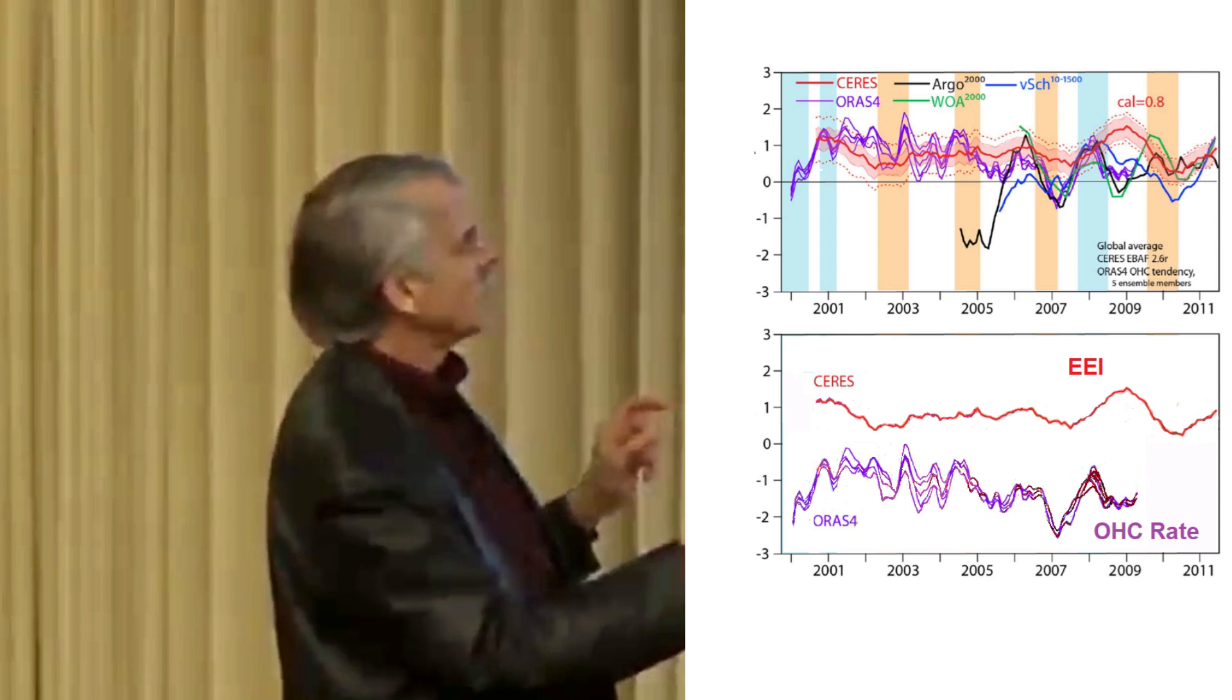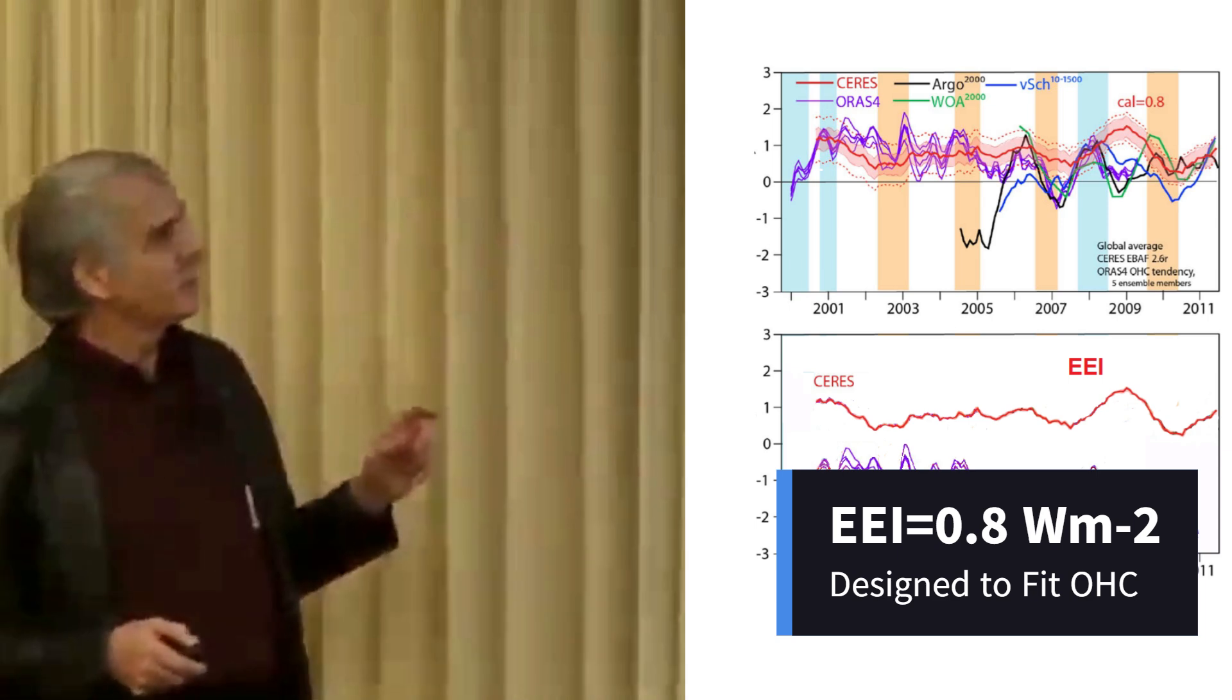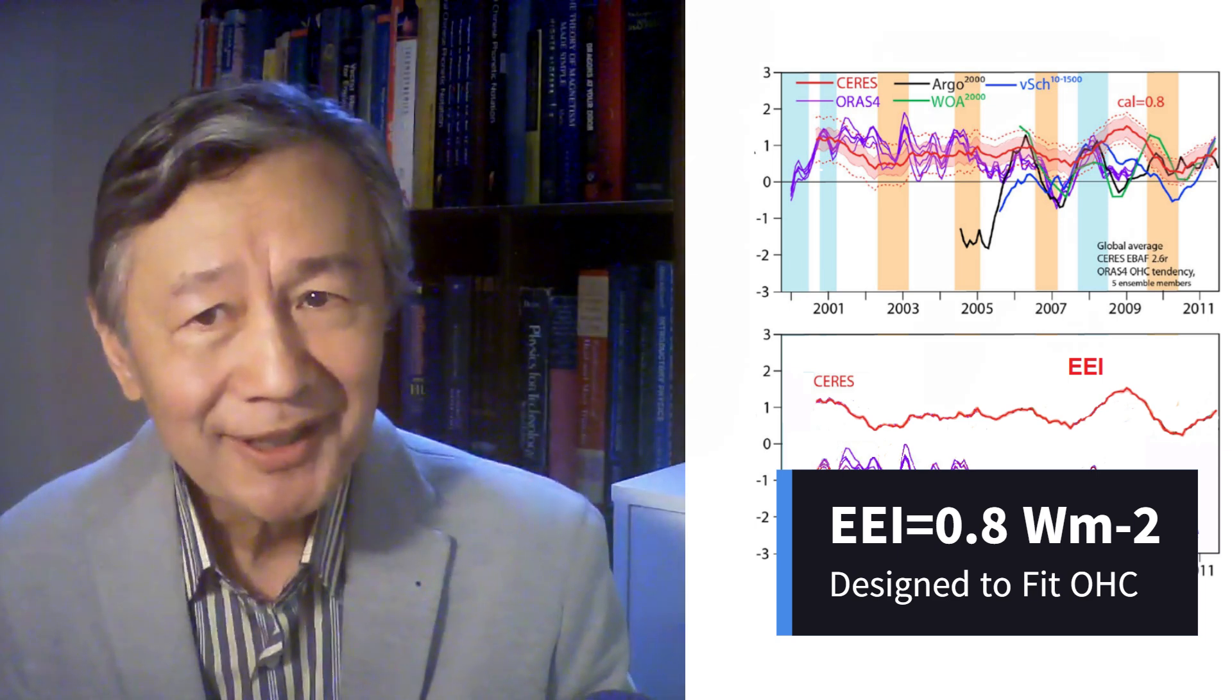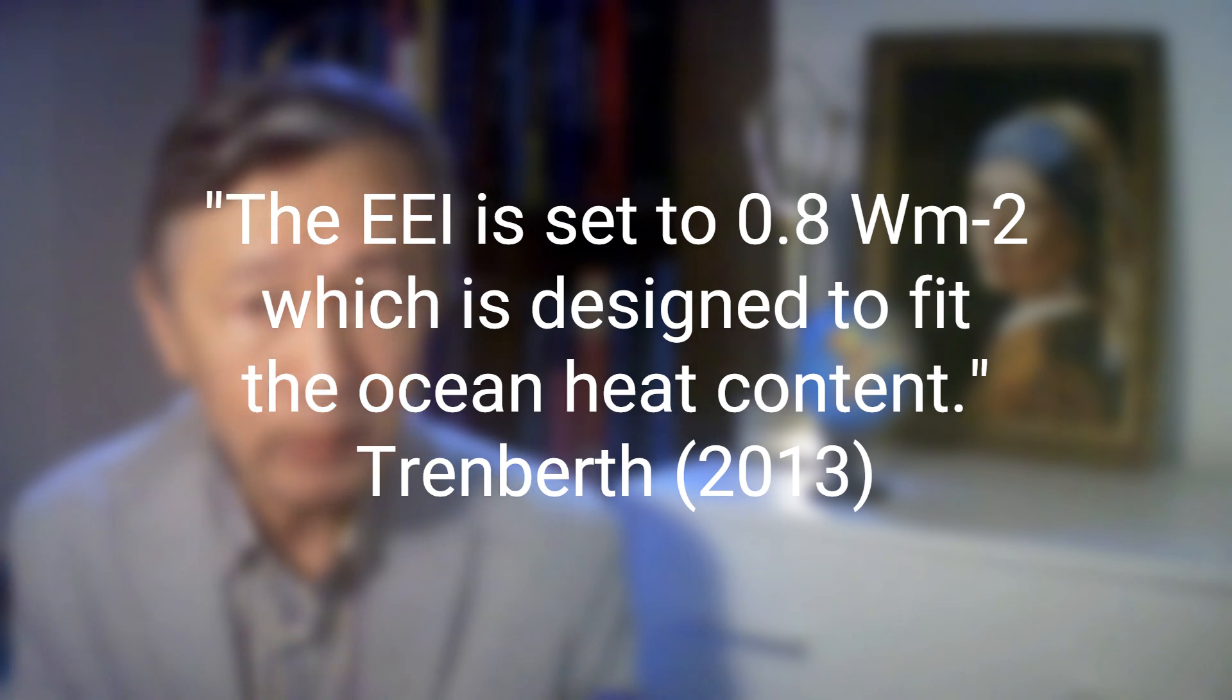Here, the energy imbalance is sort of set to 0.8 watts per square meter, which is designed to fit with the ocean heat content. Did you hear what he said? The EEI is designed, fabricated, to fit with the ocean heat content. As I revealed in my previous talk, the positive constant 0.8 watt per meter square for the EEI was demanded by James Hansen and implemented by Norman Loeb in all post-2019 CERES products.